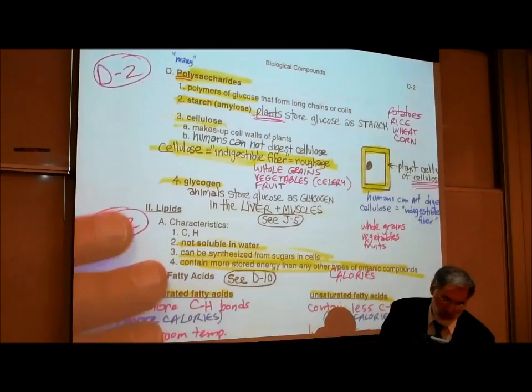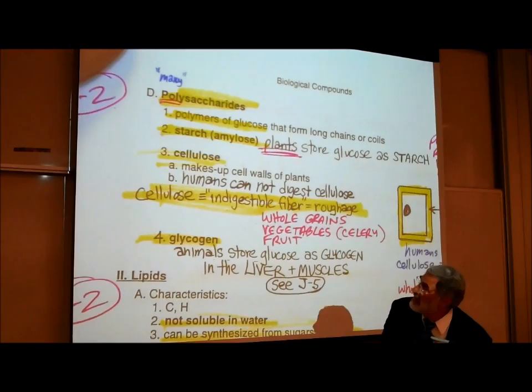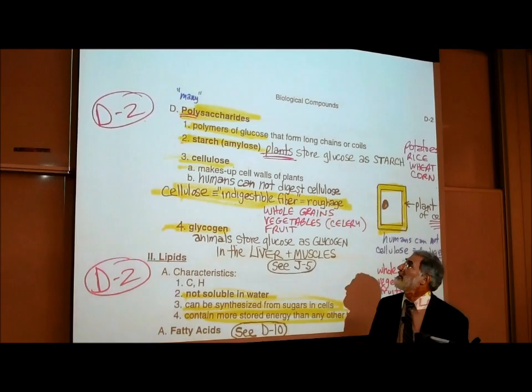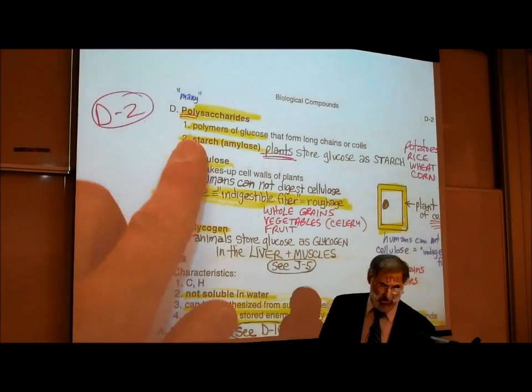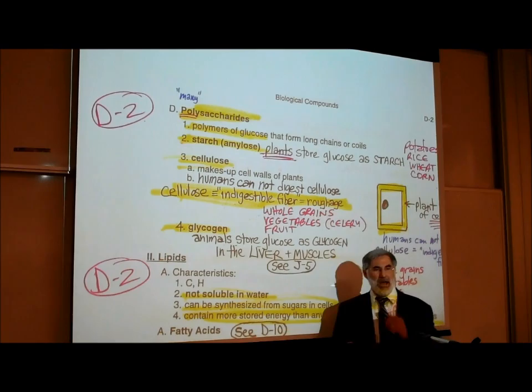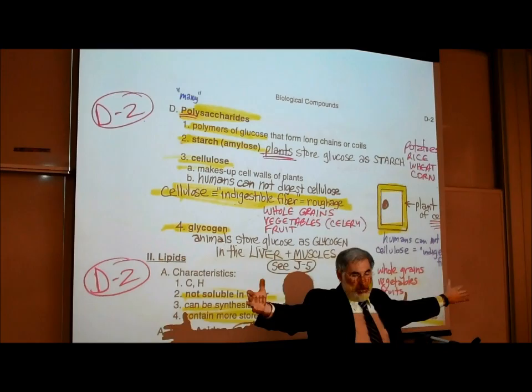On page D2, we've spoken of monosaccharides and disaccharides, and now we want to speak about polysaccharides. The root 'poly' means many, and 'saccharide' means sugars. So literally, a polysaccharide is just made up of many sugars joined together.